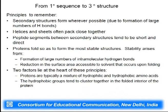Going from primary sequence to tertiary structure: secondary structure was entirely dependent on hydrogen bond formation. Helices and sheets are often closely packed and peptide segments between secondary structures tend to be short and direct. Proteins fold to give the most stable conformation; stability comes from formation of a large number of intramolecular hydrogen bonds as in secondary structure, then reduction in surface area, and the chemical interaction of R groups — proteins are typically a mixture of hydrophilic and hydrophobic amino acids.